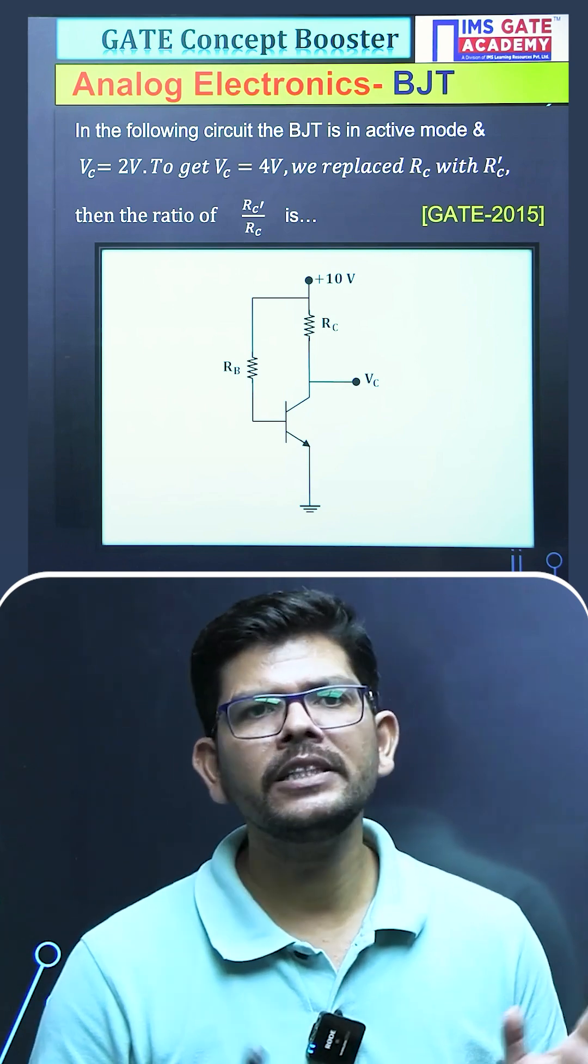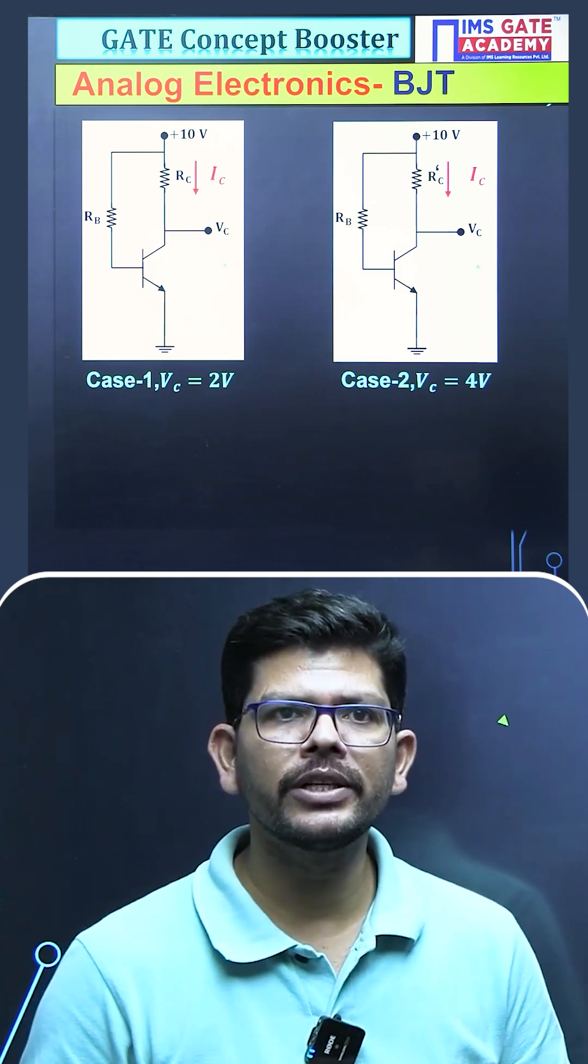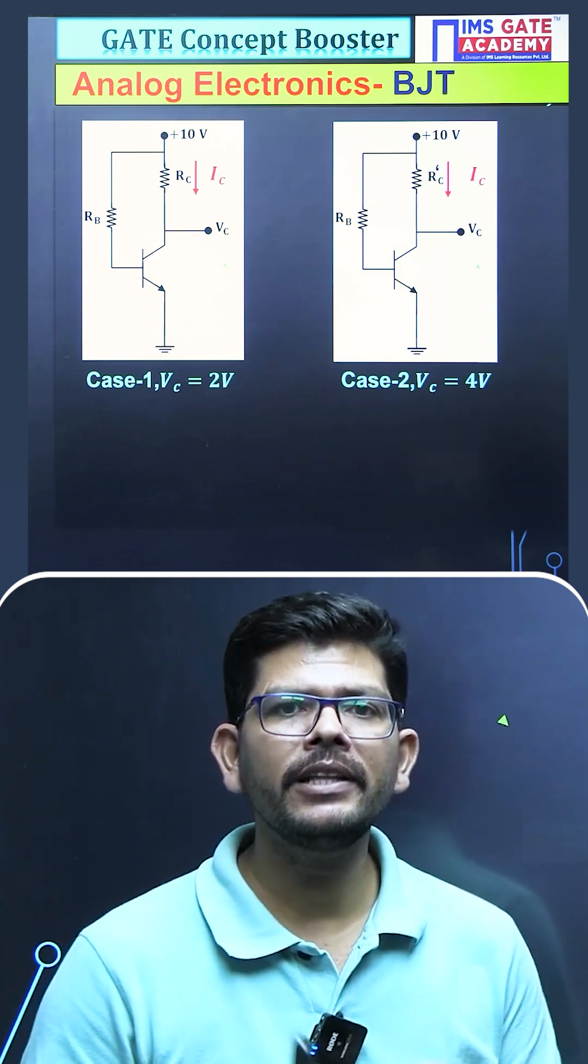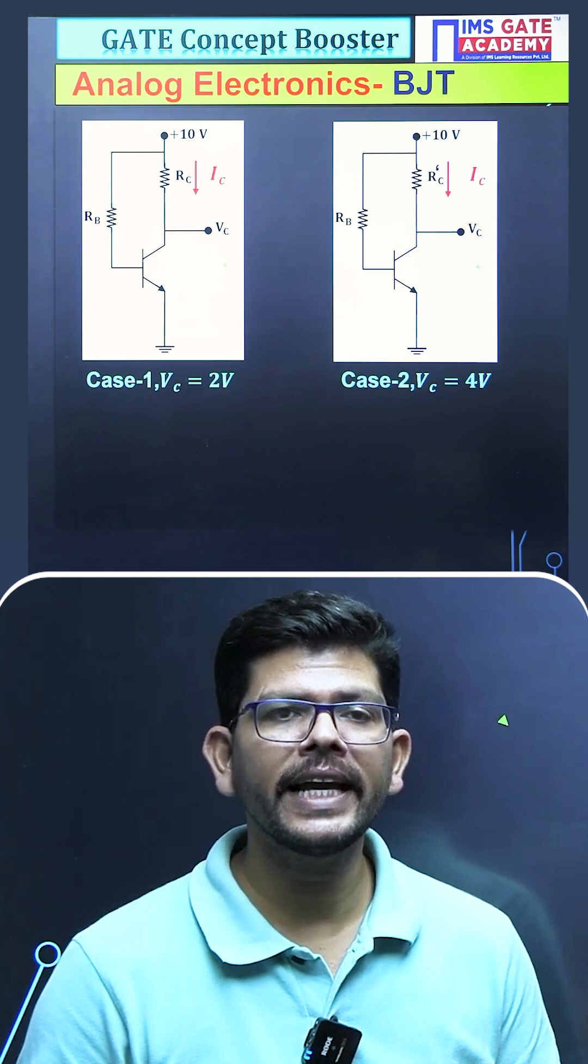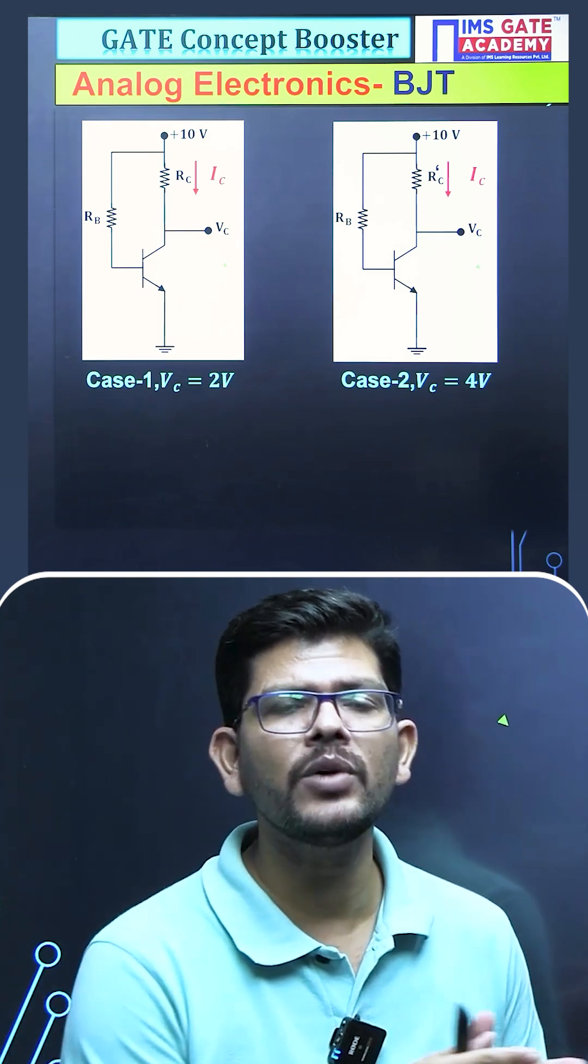Well, it's very simple. If you see in this circuit, we have been given two situations. In the first case, we have been given the VC voltage as 2V. In the second case, we have been given the VC voltage as 4V, and they have changed the resistance RC to RC dash.